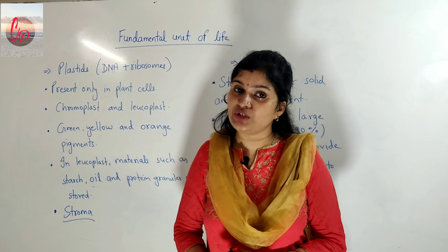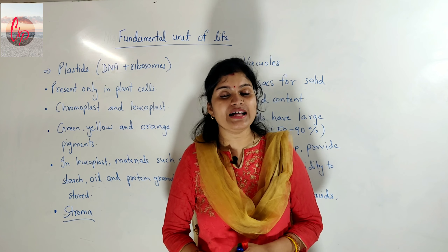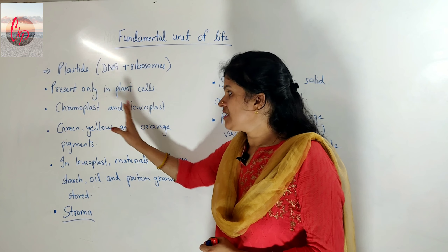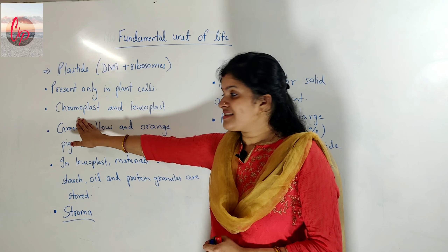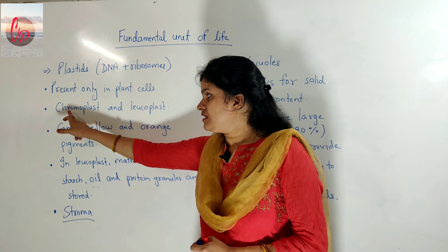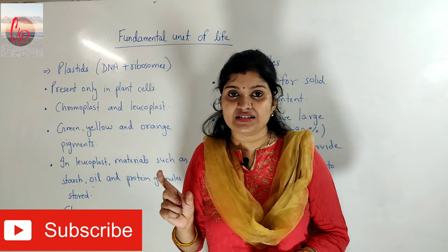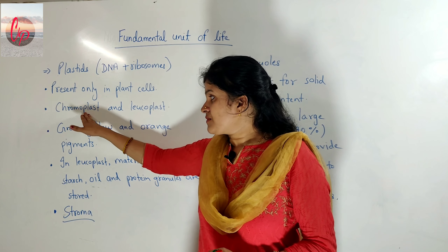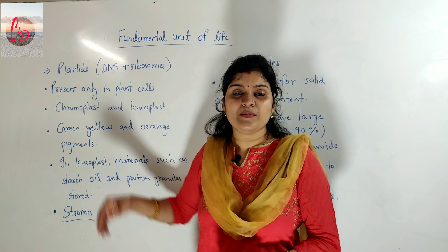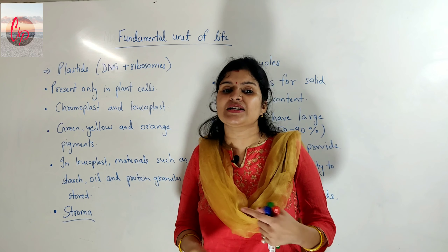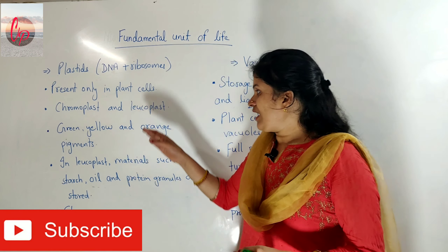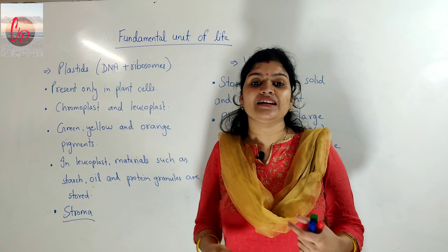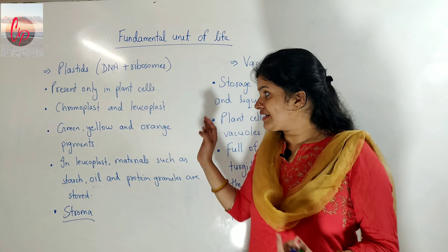Plastids can be of two different types: chromoplast and leukoplast. The term 'chromo' refers to color, so chromoplasts are colored plastids — they have some colors inside them. Leukoplasts, on the other hand, are white or colorless in nature. So chromoplasts are colored plastids while leukoplasts are colorless plastids.